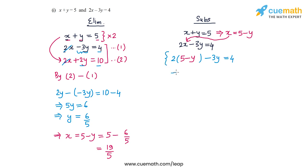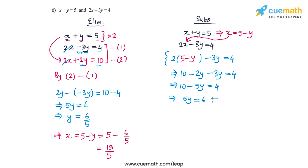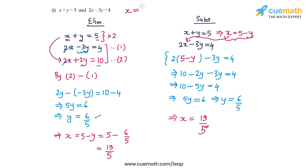This is an equation in y alone. We get 10 minus 2y minus 3y equal to 4, or 10 minus 5y equal to 4, so 5y equal to 6, or y equal to 6 by 5. Once again I get the same value as from elimination. With y equal to 6 by 5, substituting into x equal to 5 minus y gives x equal to 19 by 5. So the solution is x equal to 19 by 5 and y equal to 6 by 5.